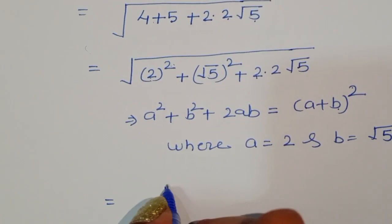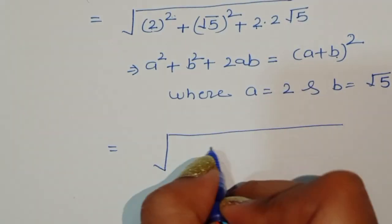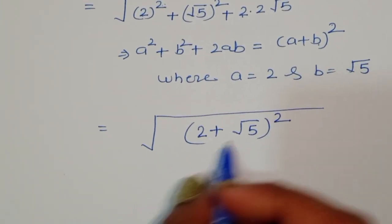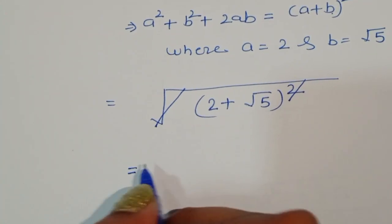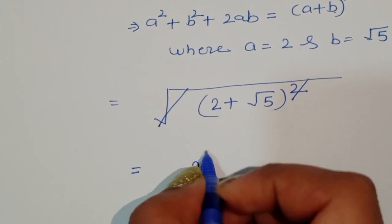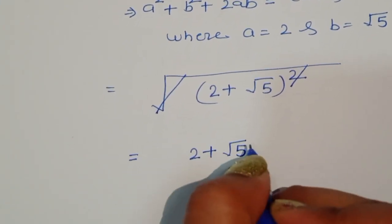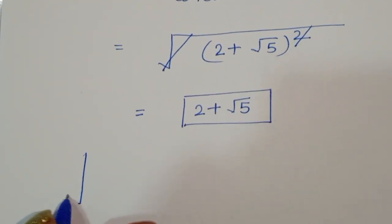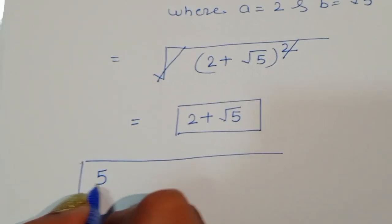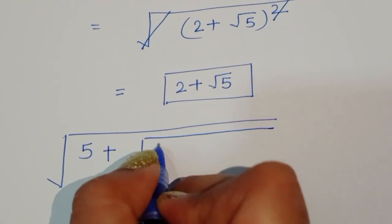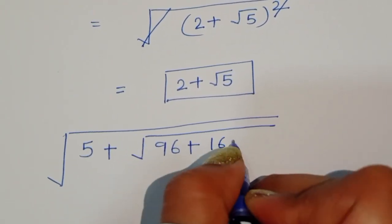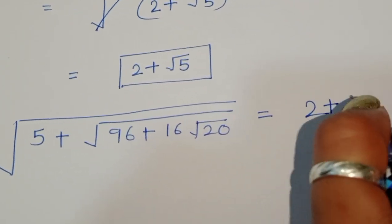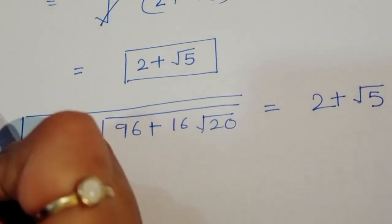We write this in the form a plus b whole squared: 2 plus square root of 5, whole squared. This square cancels with the outer square root, so the final solution is 2 plus square root of 5. Therefore, square root of 5 plus square root of 96 plus 16 square root of 20 equals 2 plus square root of 5.